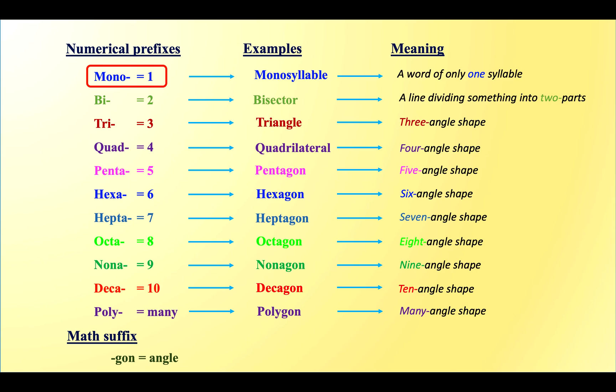Numerical prefixes: Mono means one. Bi means two. Tri means three. Quad means four.